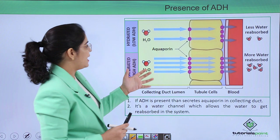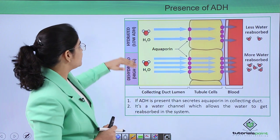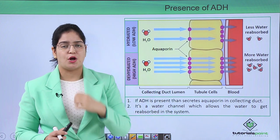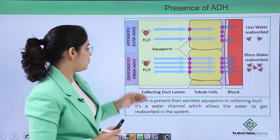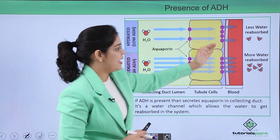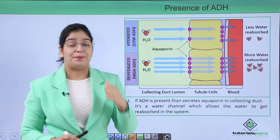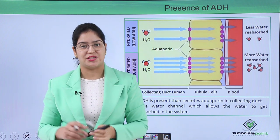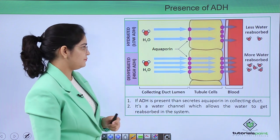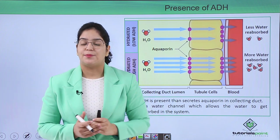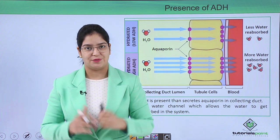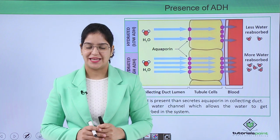When you are hydrated, less water or almost nil water is reabsorbed. But when you are dehydrated, aquaporins are present and more water is reabsorbed — all because of the difference in concentration gradient between the tubule and outside the cell. In this video, we have talked about the counter-current mechanism. I hope you understand the concept very well. Thank you.